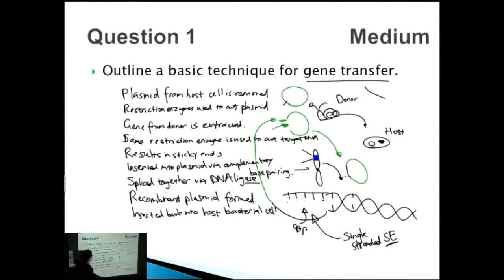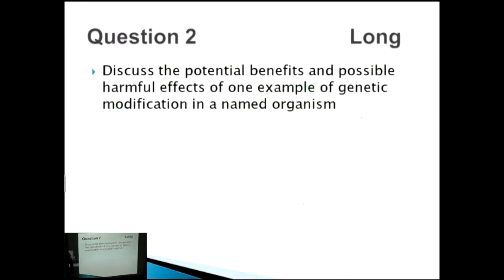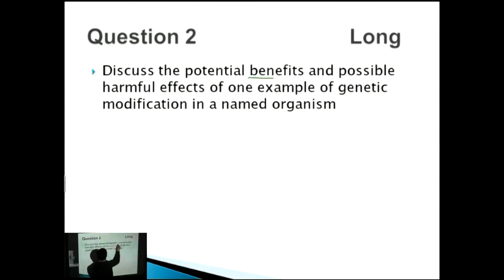Counting up the marks: we've got nine points for this six-mark question, so nine out of six — perfect. The next question is a bit longer. It asks you to discuss the potential benefits and possible harmful effects of one example of genetic modification in a named organism. There are three main parts: benefits, harmful effects, and naming one example.